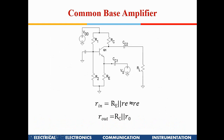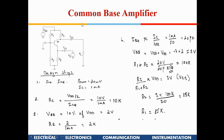Regarding input and output impedances: R-in is the input impedance seen at the emitter node, which is RE (the intrinsic emitter impedance) in parallel with the external RE. Since RE is in ohms and the external RE is in kilo-ohms, the input impedance is approximately RE — very low. R-out at the collector node is RC in parallel with R0, the output impedance of the transistor.